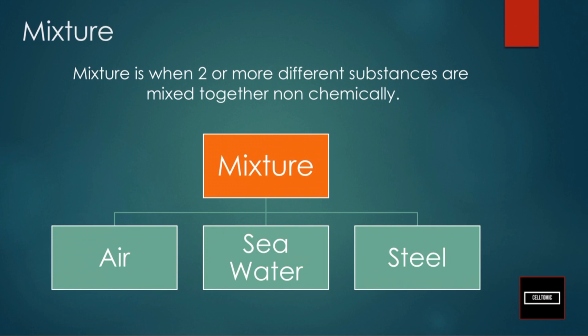So examples of mixtures can be air. So your air has oxygen, carbon dioxide, nitrogen, and many others.